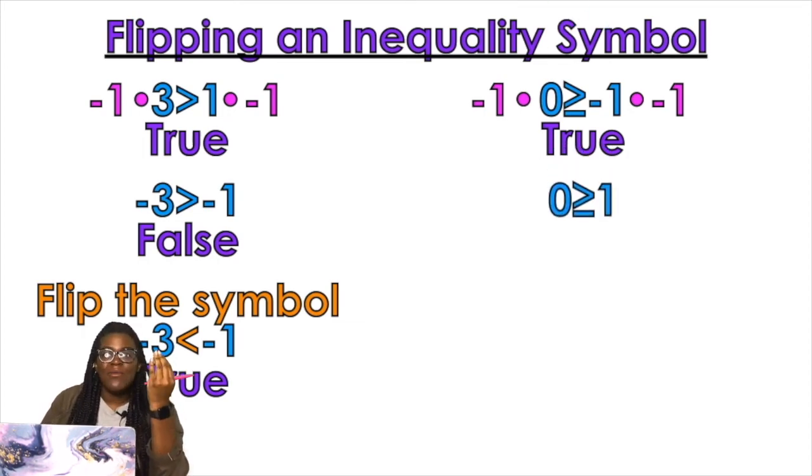And so I would get 0 still on one side, because negative 1 times 0 is 0. And I would get negative 1 times negative 1 on the other side, which is positive 1. So now my statement says 0 is greater than or equal to 1.